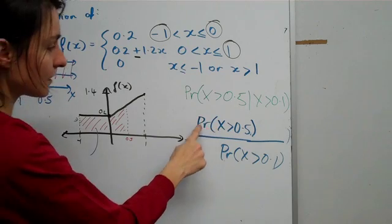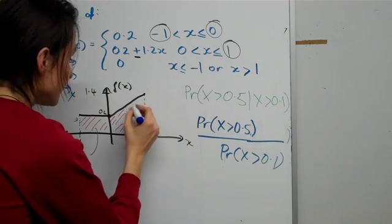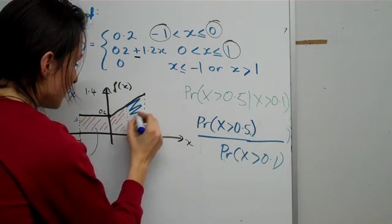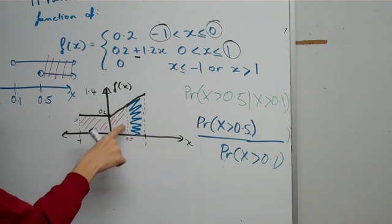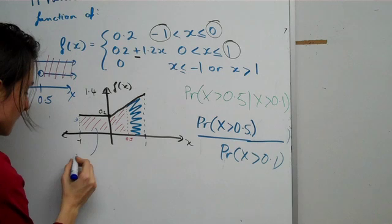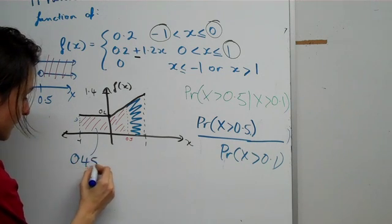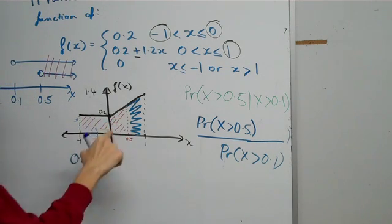So let us see what this actually means. First of all, we need to find the probability that x is greater than 0.5. So we need to find this probability now. But we already found that one. We found that to be 0.45.